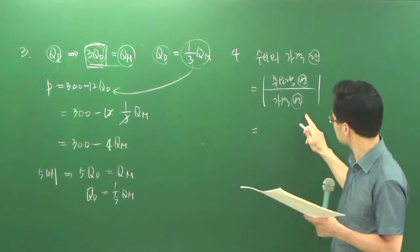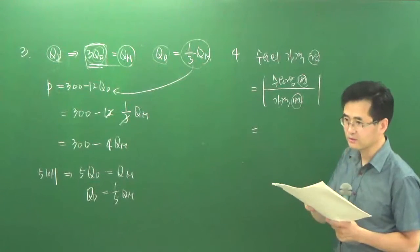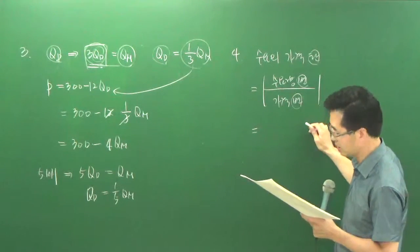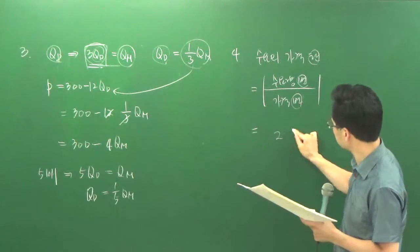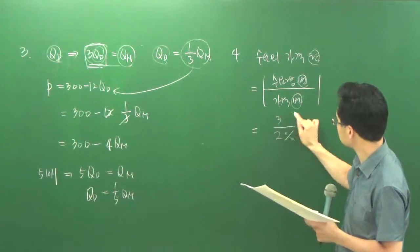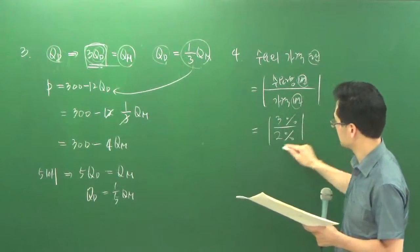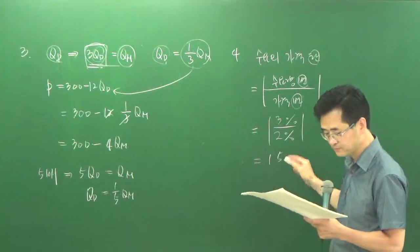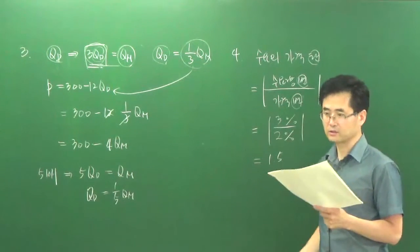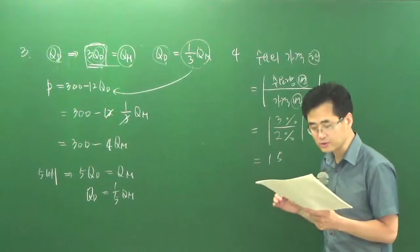문제에서 퍼센트까지 계산을 해줬잖아요. 그러니까 그냥 가격 2%, 수요량 상품 끝이죠. 그러면 1.5 이렇게 되잖아요. 5번도 마찬가지 형태니까 여러분이 보실 수 있잖아요.